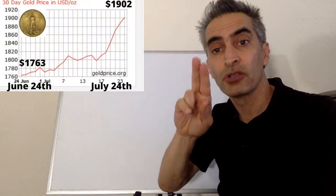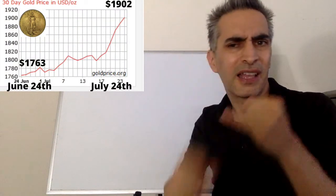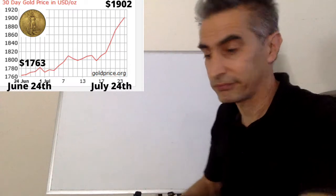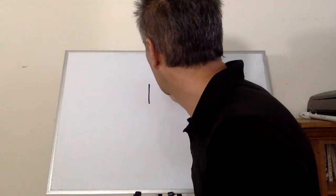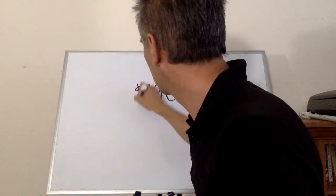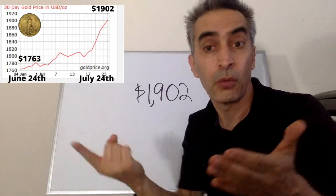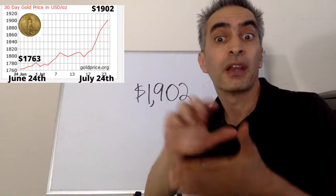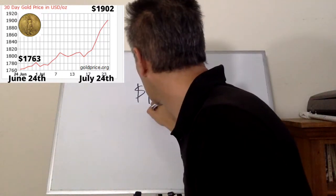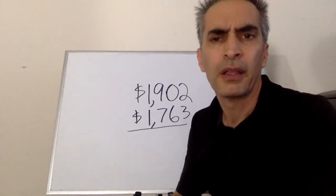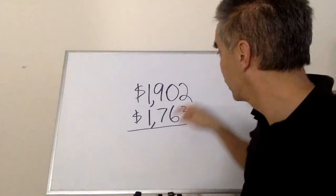How are we going to calculate the percentage growth for gold? We're going to start on July 24th, which shows us the ending price for gold: $1,902. Next, we're going to write the initial price on June 24th, which was $1,763.